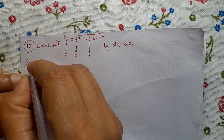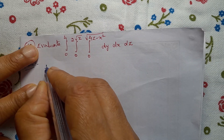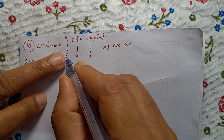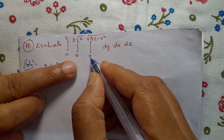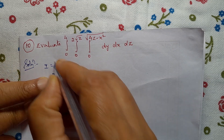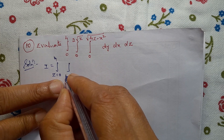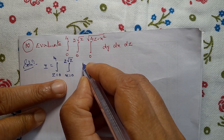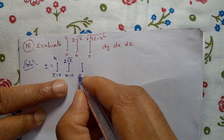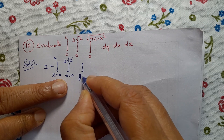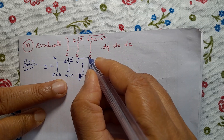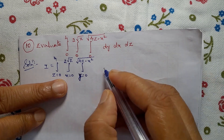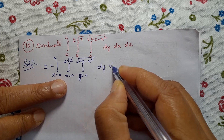Solution for this problem: I is the triple integral. The outermost limit is for z: z = 0 to 4. The next limit is for x: x = 0 to 2√z. The innermost limit is for y: y = 0 to √(4z − x²). Then dy dx dz.